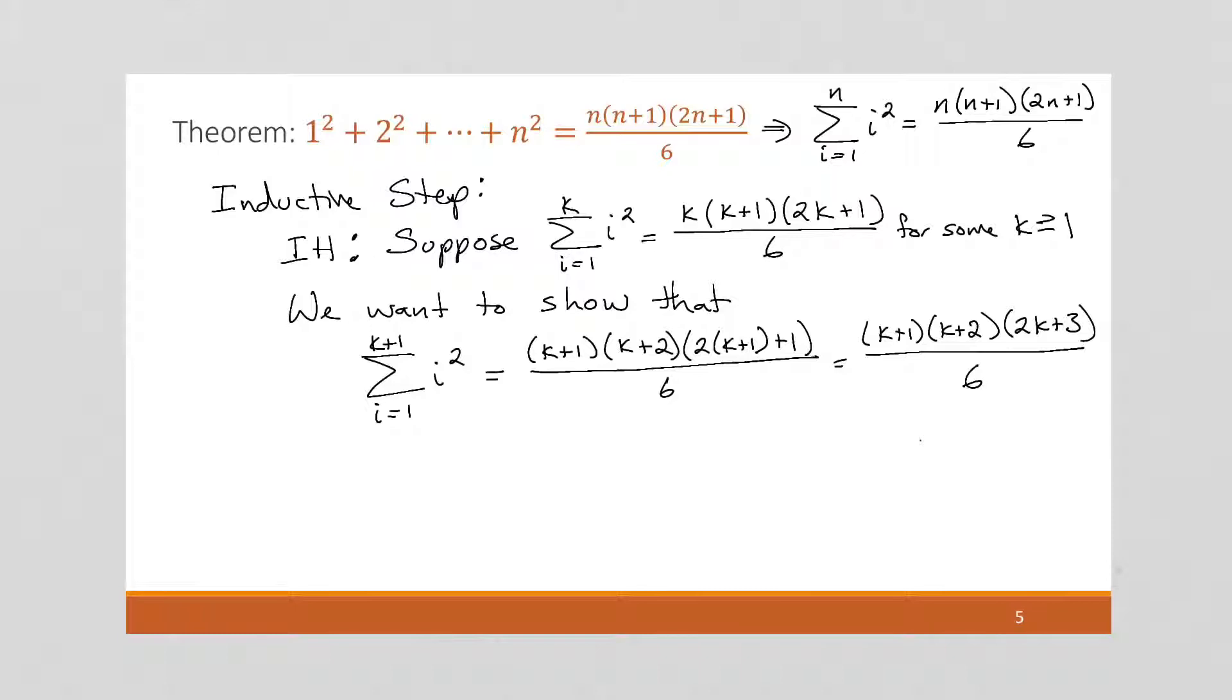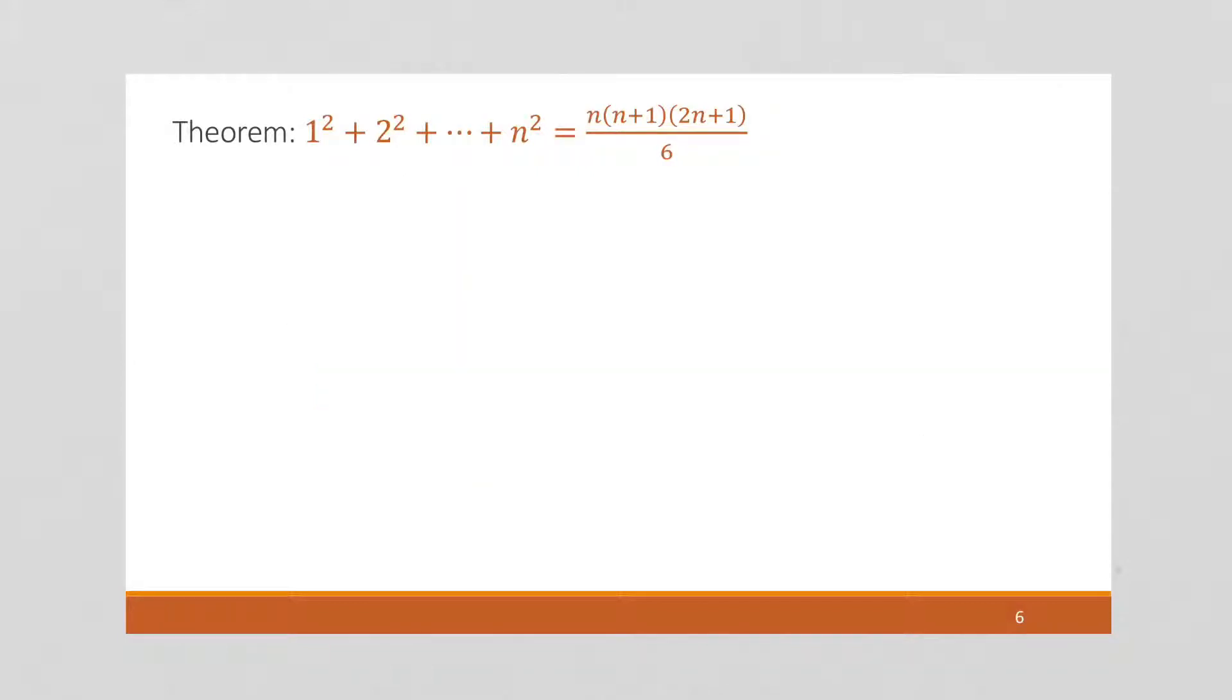As we've shown before, we can pick either side to start with. And this is not always the case, but with these summation problems, it's usually easiest to start with a summation. So we want to start here. So here we're going to have the sum of i equals 1 to (k plus 1) of i squared. And as in the previous problems, we're going to pull the final term off, so we can use the inductive hypothesis. And that final term is going to be the (k plus 1) term, and it will be squared.